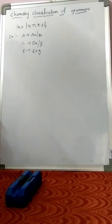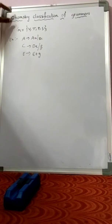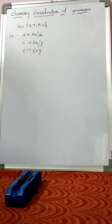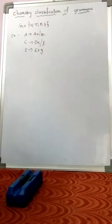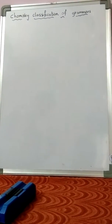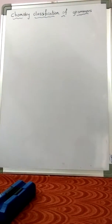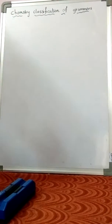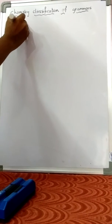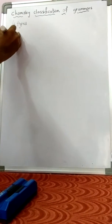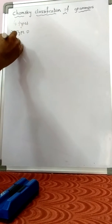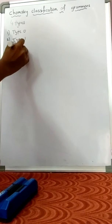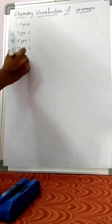Let's look at Types of Grammars. For Types of Grammars, we have the classification of Chomsky. We have four grammars: Type-0, Type-1, Type-2, and Type-3. According to Chomsky classification, grammars are divided into four types.